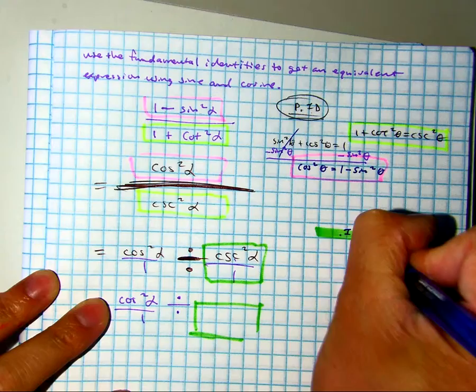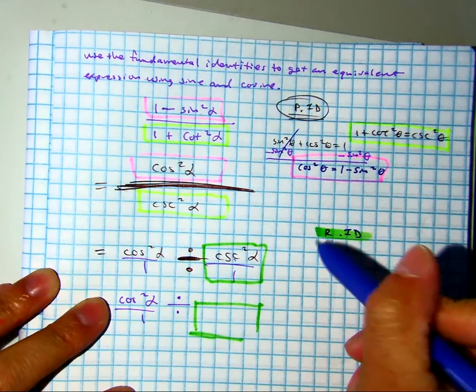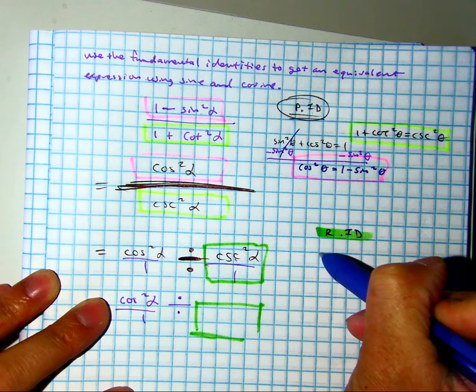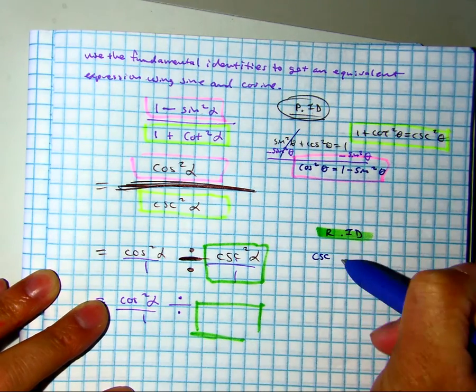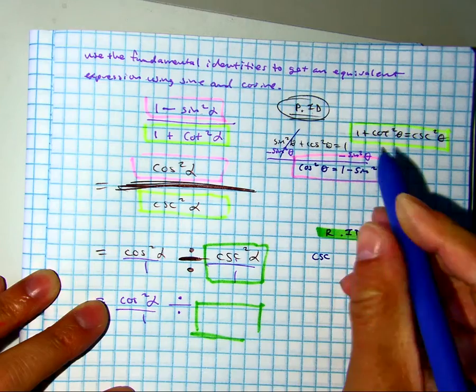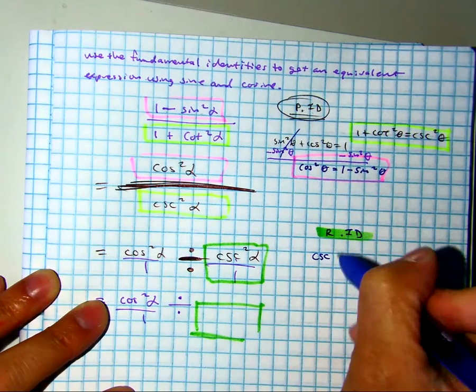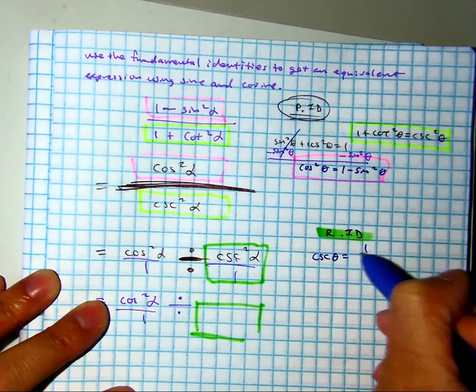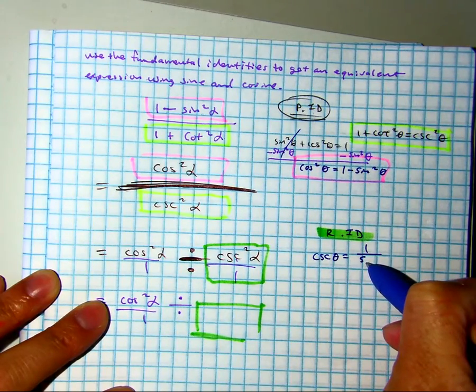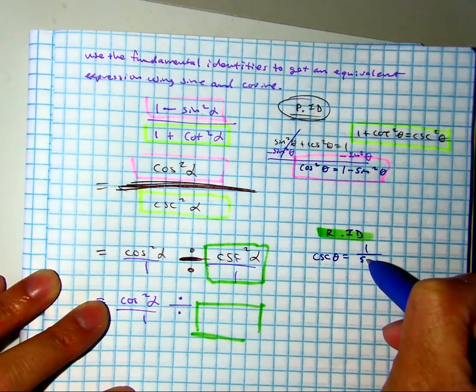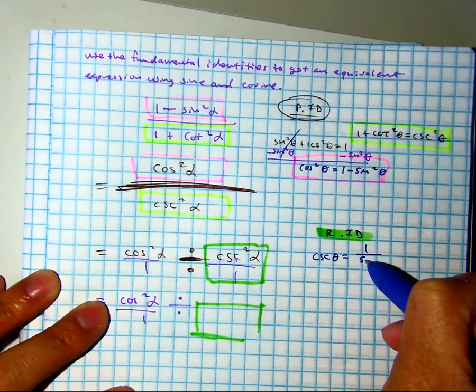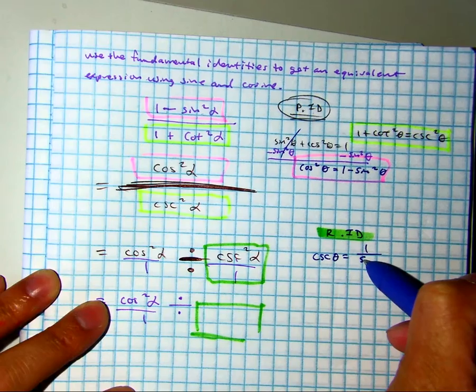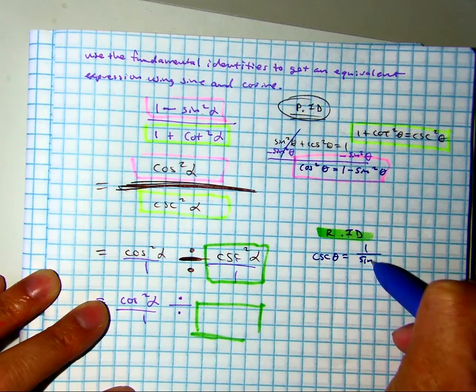And what is the reciprocal identity you're using? Cosecant theta equals 1 over sine of theta.